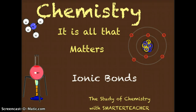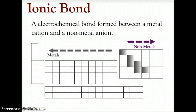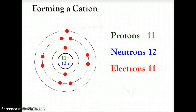Let's continue with chemistry — it is all that matters — and today we're going to talk about ionic bonding. An ionic bond is an electrochemical bond formed between a metal cation and a nonmetal anion. If we look at the metalloid staircase, everything to the left is a metal and everything to the right is a nonmetal. Metals typically become cations by losing electrons and becoming positively charged, and nonmetals typically become anions by adding electrons and becoming negatively charged.